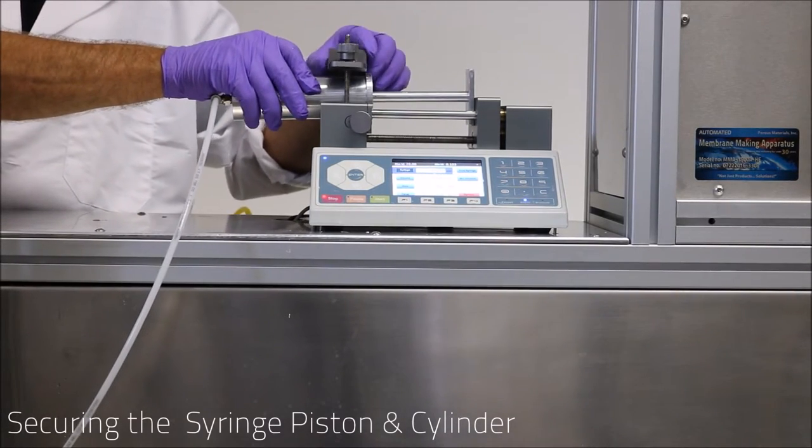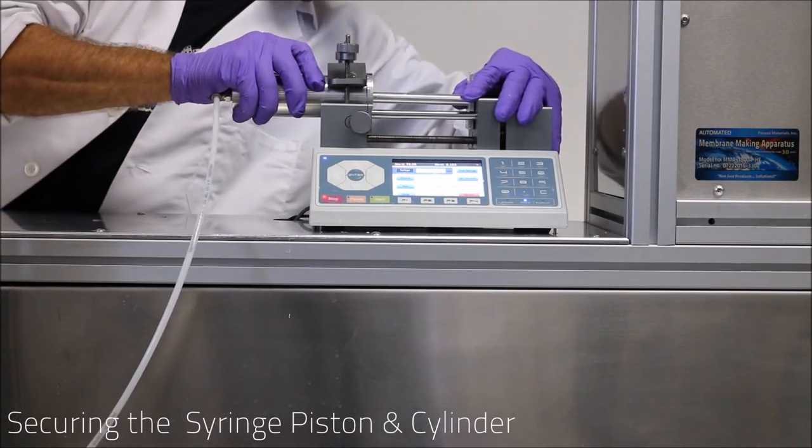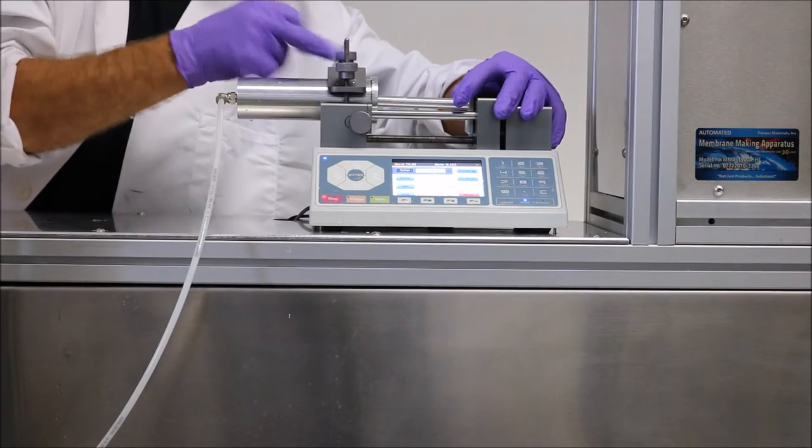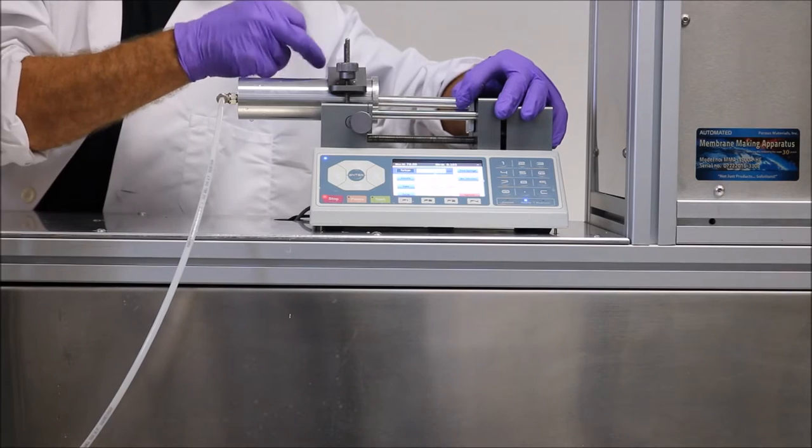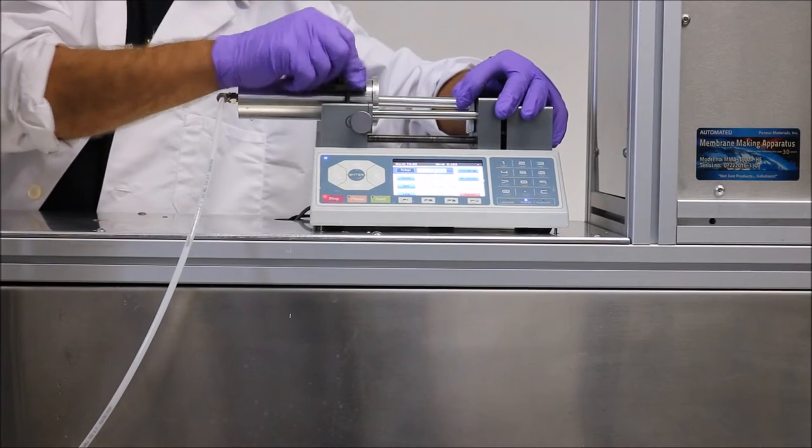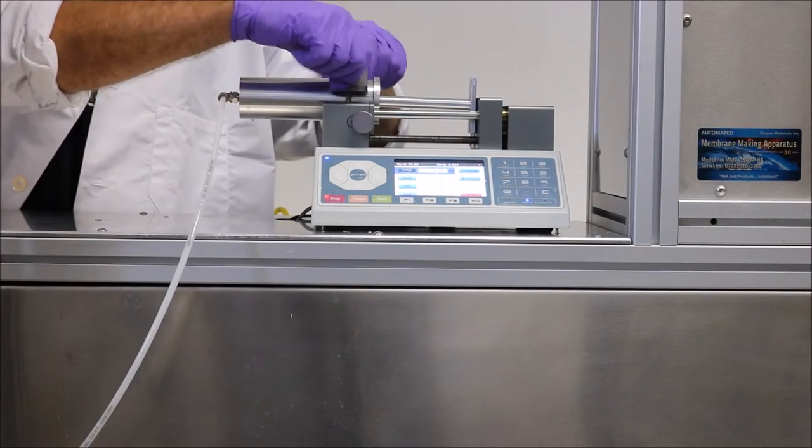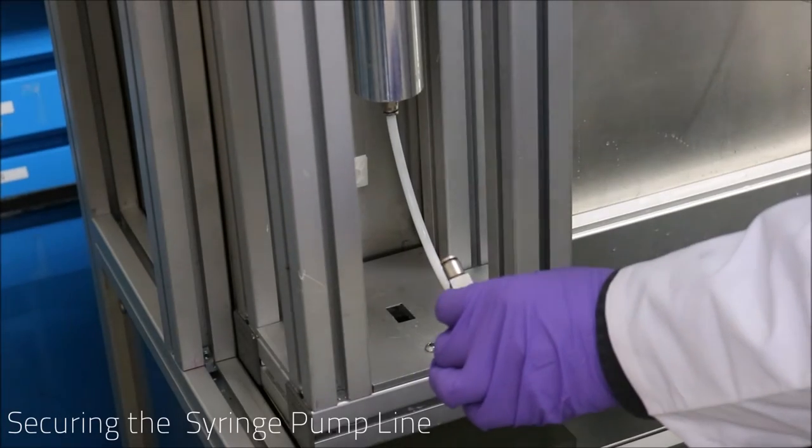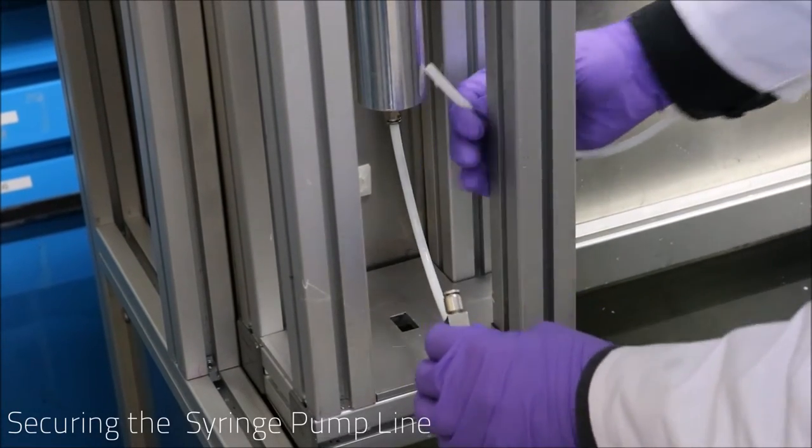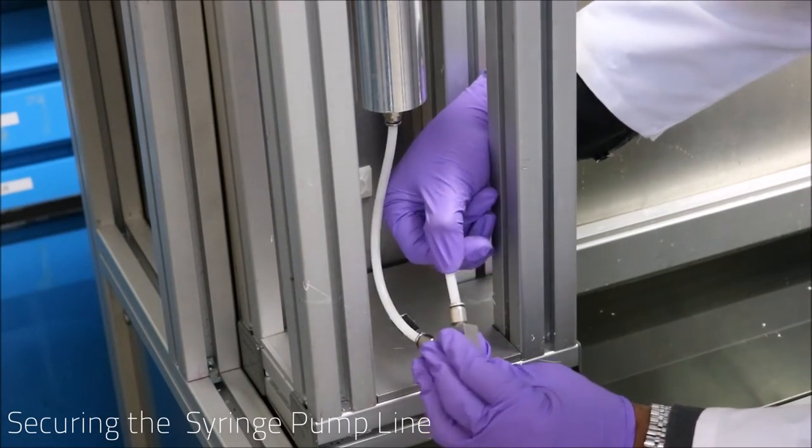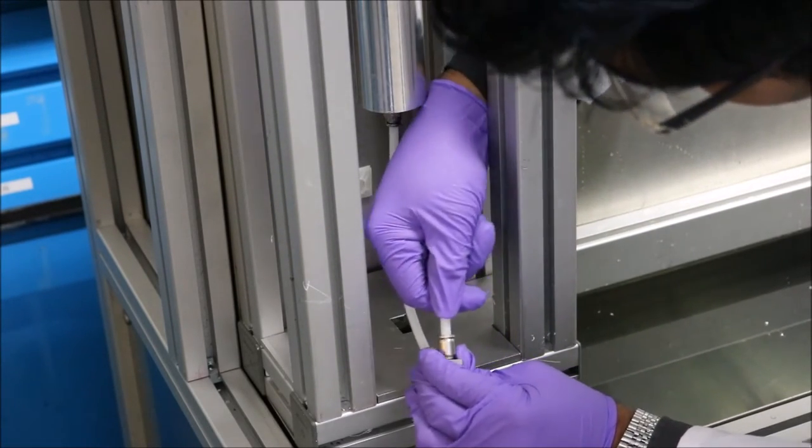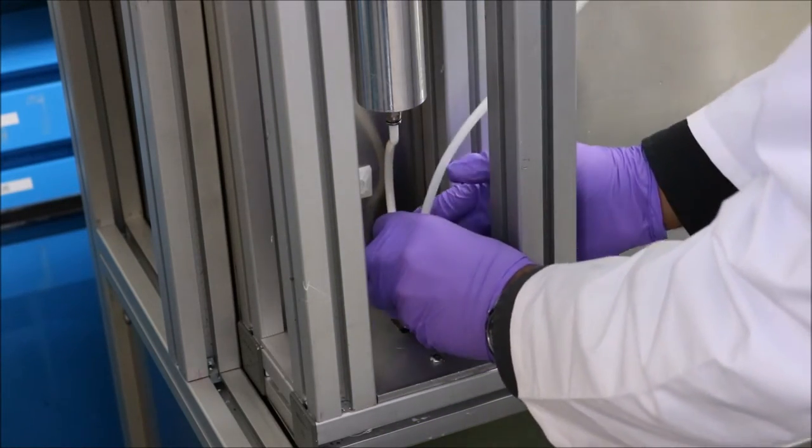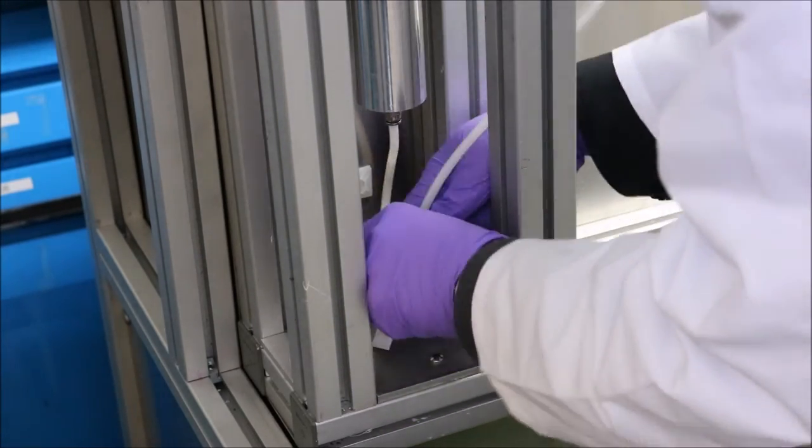Now we need to secure the syringe piston cylinder onto the syringe pump. Insert the piston into the cylinder of bore solution, then place the assembly into the vise of the syringe pump and tighten accordingly. Next, secure the line from the syringe pump into the quick connect fitting on the dispensing nozzle. Make sure it is seated properly in its mounting slot.